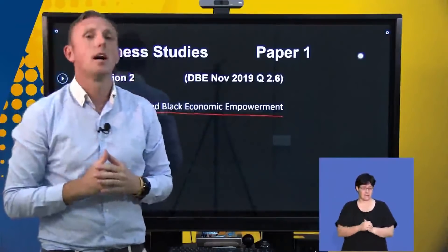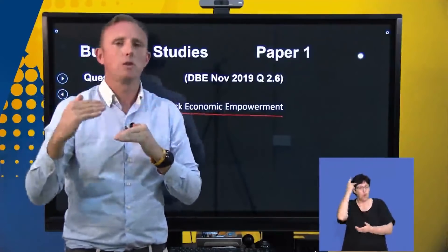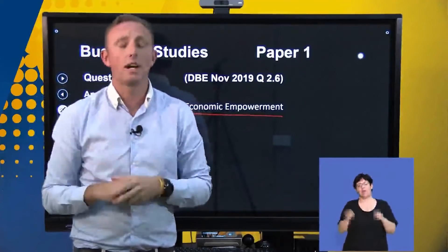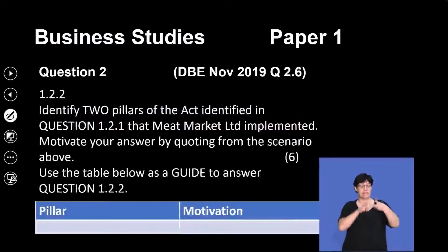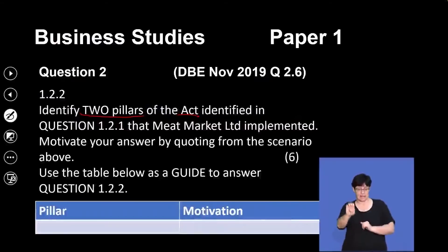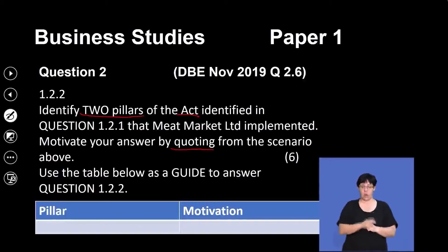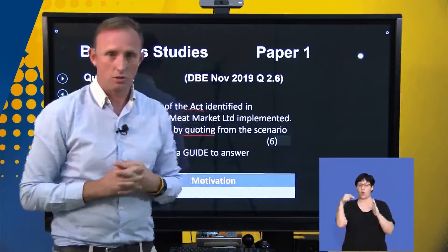There's a follow-up to the first question. You need to ensure that you know what you're doing with the acts, because if you get the first question wrong, you're going to get the second question wrong and lose out on unnecessary marks. The second question was: identify two pillars of the Broad-Based Black Economic Empowerment Act that Meat Market Limited implemented, motivating your answer by quoting from the scenario above. Please make sure that when you quote, you put the quotation marks in there so as to ensure that you don't lose marks.